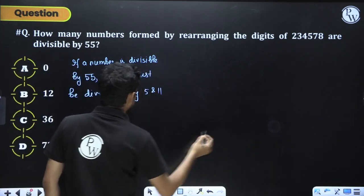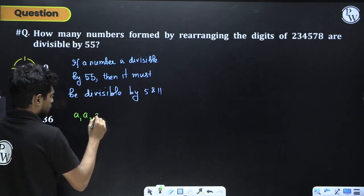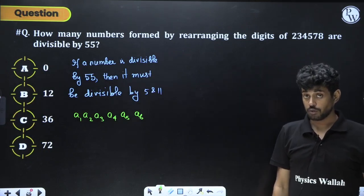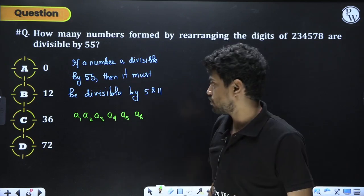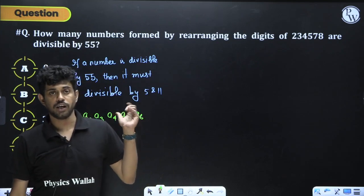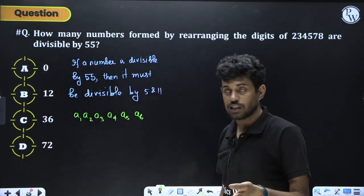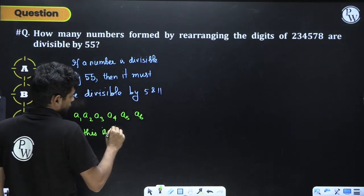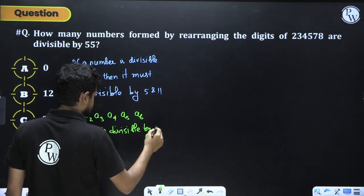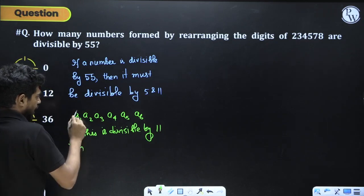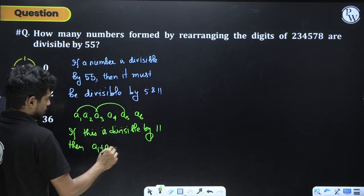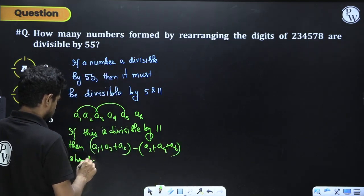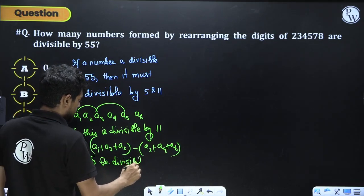For divisibility by 11: if the number is A1A2A3A4A5A6, then (A1 + A3 + A5) - (A2 + A4 + A6) must be divisible by 11. The minimum sum of any 3 digits from {2,3,4,5,7,8} is 2+3+4=9, and the maximum is 5+7+8=20. The difference is 20 - 9 = 11.